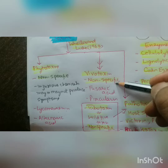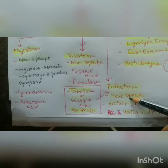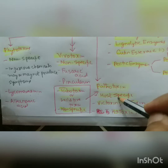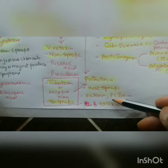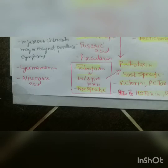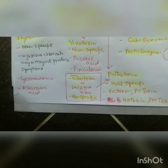Phytotoxins are non-specific injurious chemical substances which may or may not produce symptoms; examples are lycomerismine and alternaric acid. Second are vivotoxins, which are also non-specific; examples are fusaric acid and pericularin. Third are pathotoxins, which are host-specific — very important for IFS, IAS, and MAAC exams where questions ask about host-specific versus host non-specific toxins. Pathotoxins include victorin, PC toxin, HS toxin, and PM toxin. Tabtoxin, also called wildfire toxin, is non-specific.